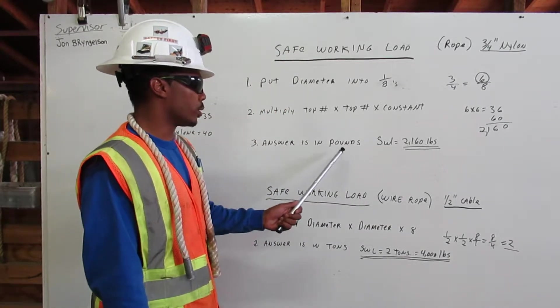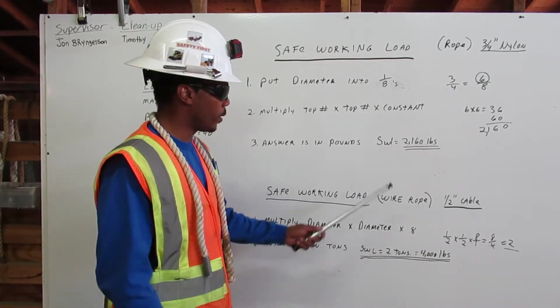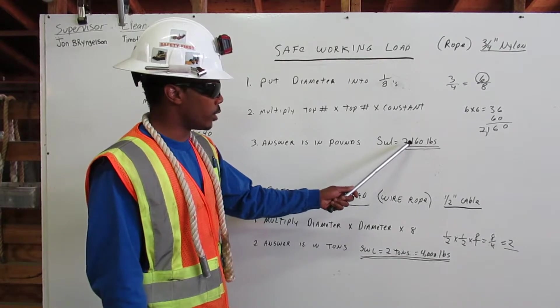Next, answer is in pounds. The safe working load for three-quarter inch nylon rope is 2160 pounds.